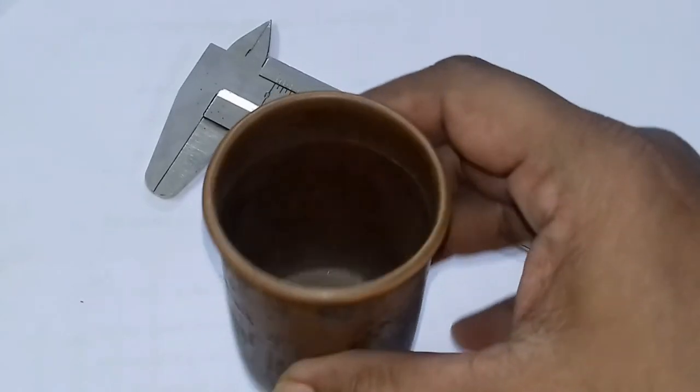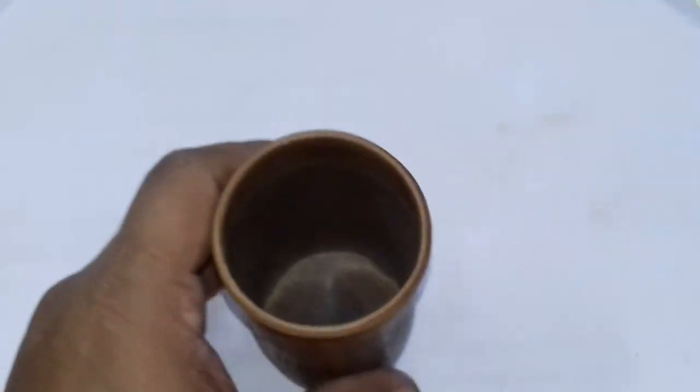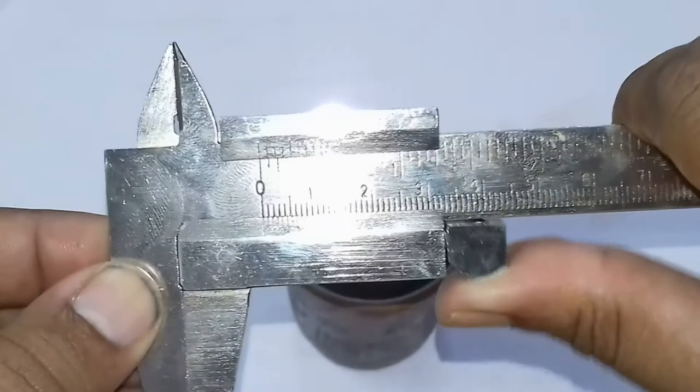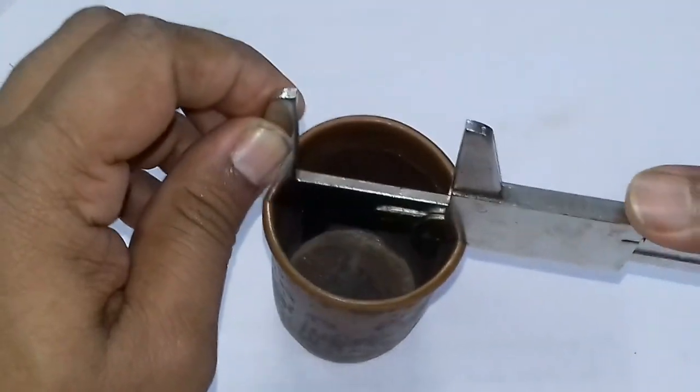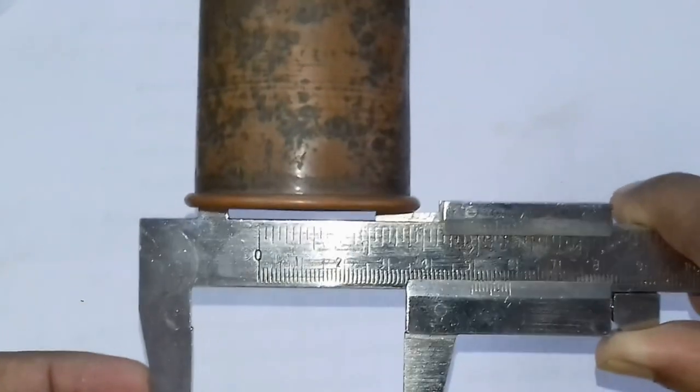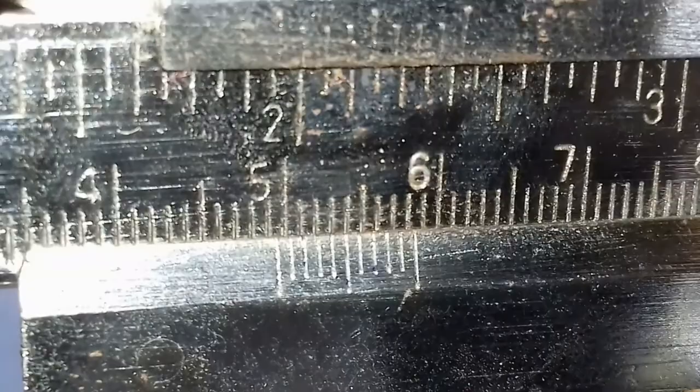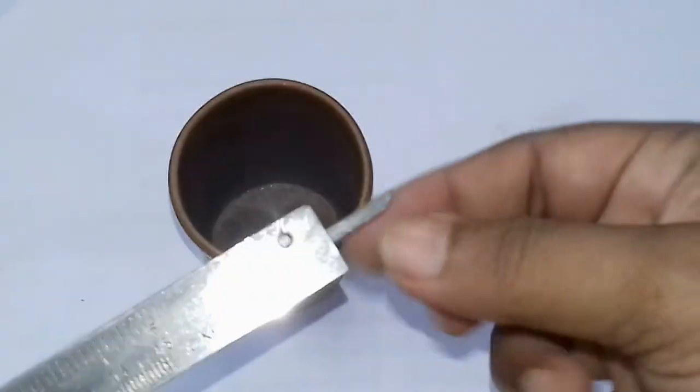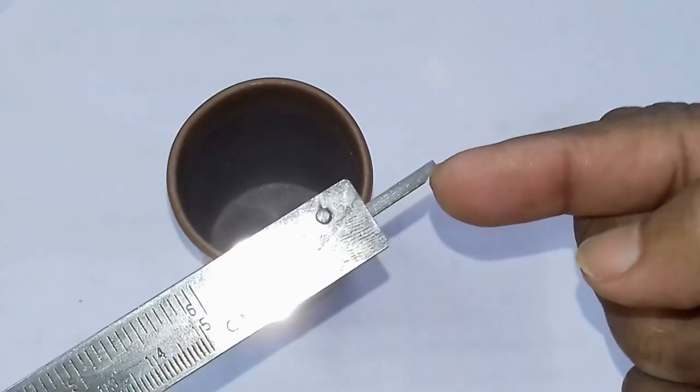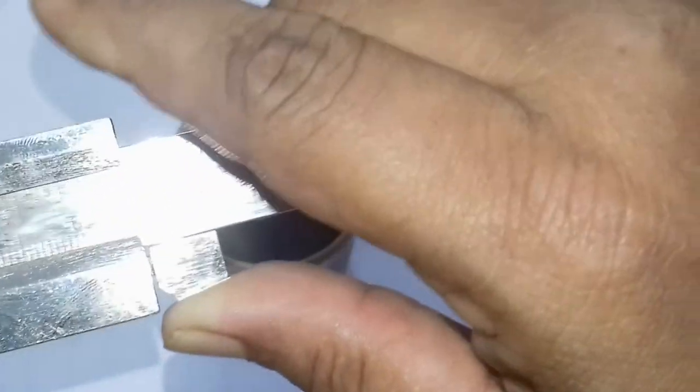Now, just have a look how to fix the inner caliper jaw for measuring internal diameter of the calorimeter. In order to find the depth of the calorimeter, use the limb at the end of the Vernier caliper.